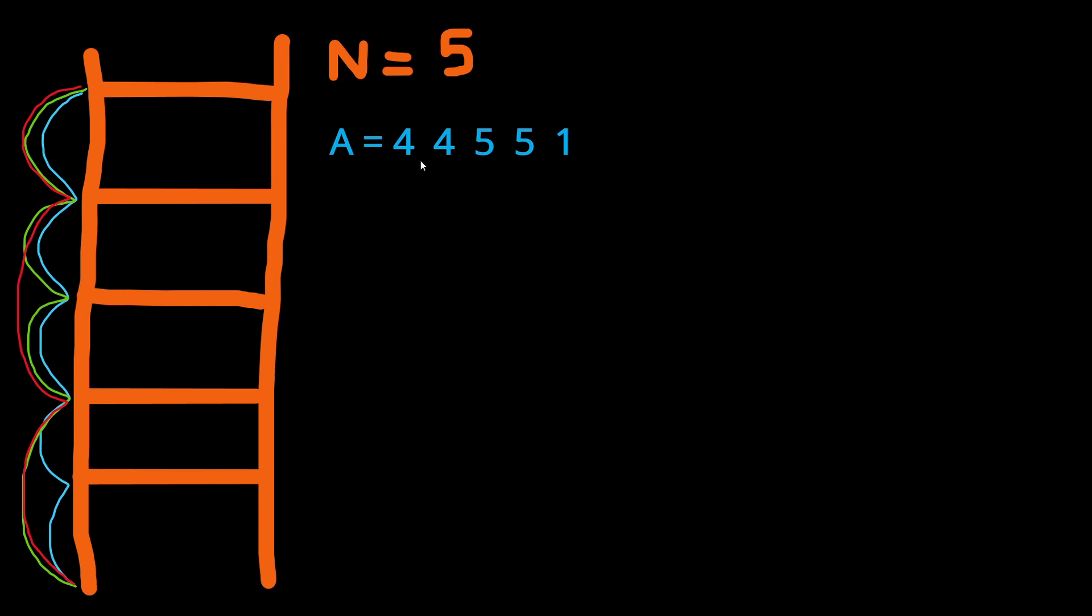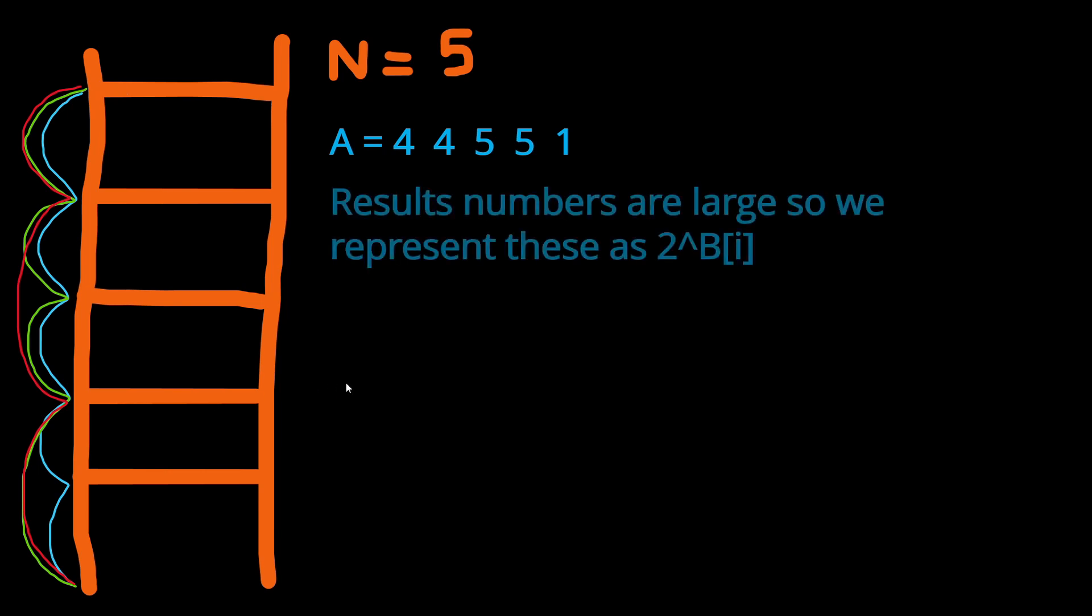So for each of these ladders we will find all the different combinations of one rung at a time or two rungs at a time steps to reach the top of the ladder. However, the results might reveal large numbers, so we are going to represent these as 2 to the power of B. The array B is also provided as a parameter for the function.